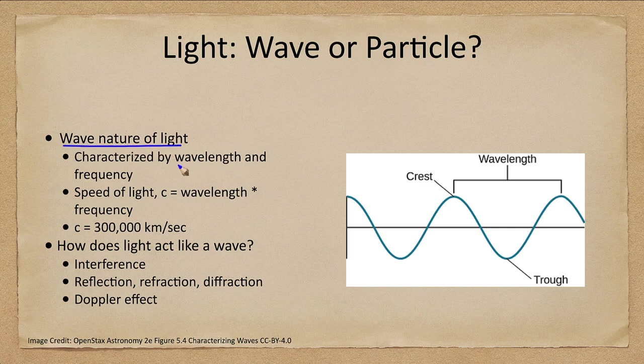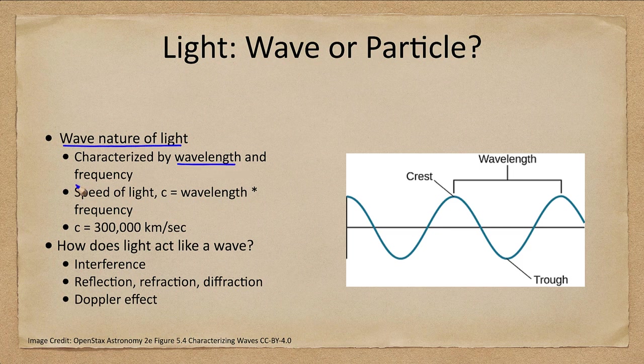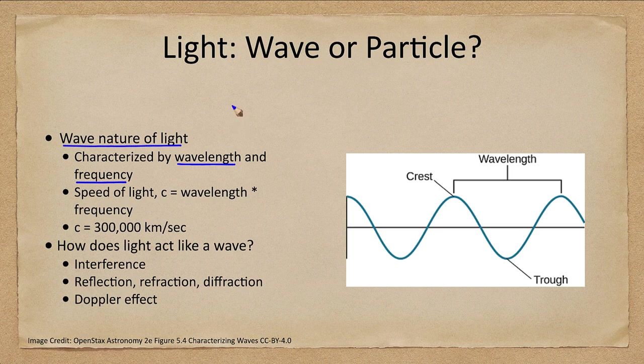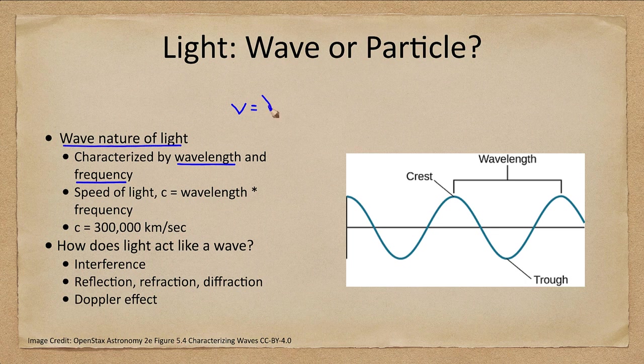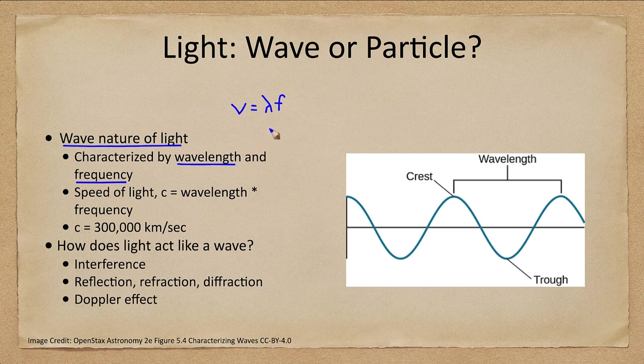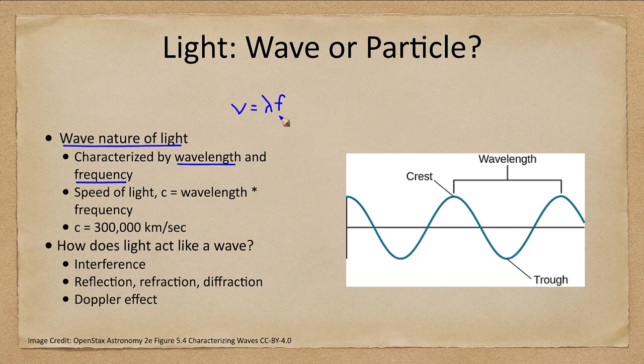So let's look at the wave nature of light first. Light is a wave which is characterized by a wavelength and a frequency. And for any wave, the velocity of the wave is equal to its wavelength, which is given by the Greek letter lambda, times the frequency.